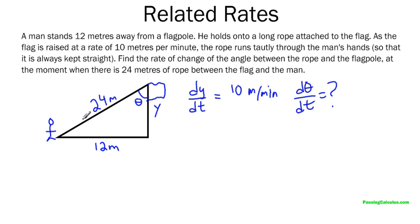there's 24 meters of rope between the flag and the man. So this guy up here is 24 meters. So note that this distance is changing. But this triangle is made for one exact moment when it's exactly 24 meters. So even though I have this 12 meters that's fixed, that's not changing. This 24 meters is changing. But this is like at the moment when it's 24 meters.